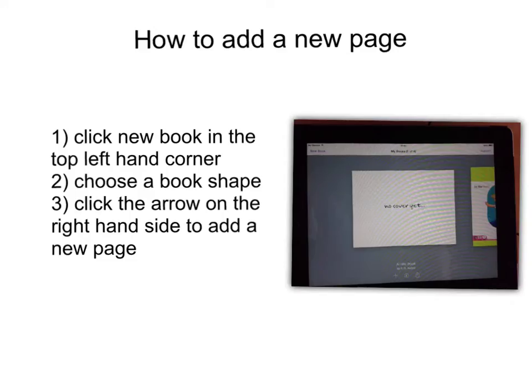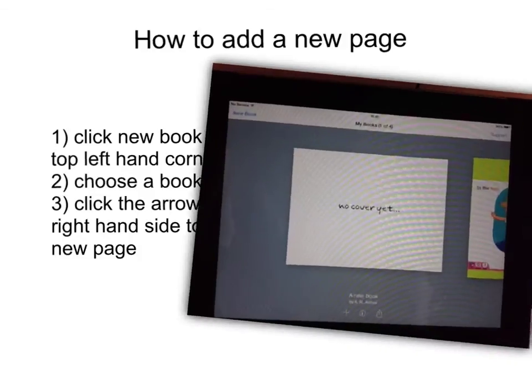How to add a new page. Click the new book in the top left hand corner. Choose a book shape, then click the arrow to add to the right hand side.